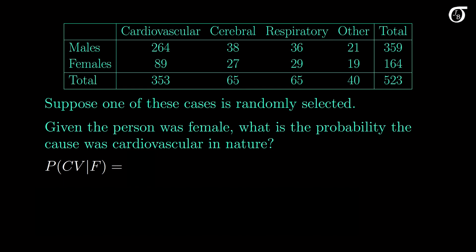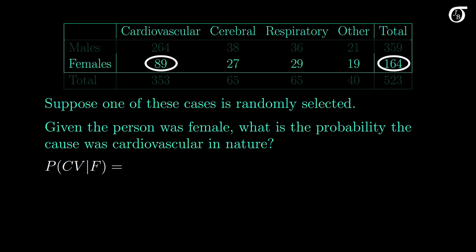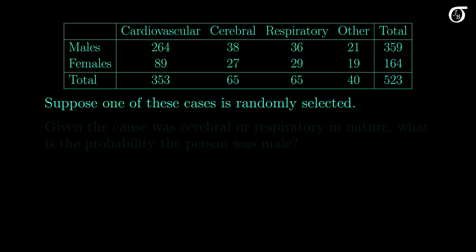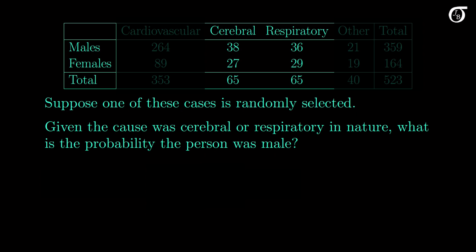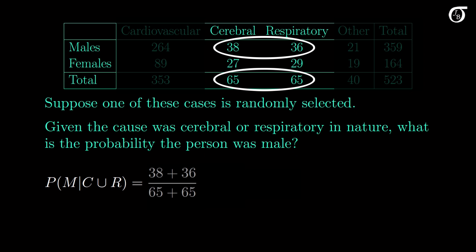If we switch the conditioning and need to find the probability the death was cardiovascular given the person was female, then our sample space reduces to just females, and this conditional probability is 89 over 164. For another question: given the cause was cerebral or respiratory in nature, what is the probability the person was male? The sample space reduces to just those 130 cases, and the probability is 38 plus 36 over 130.